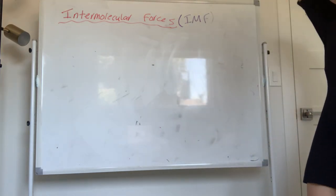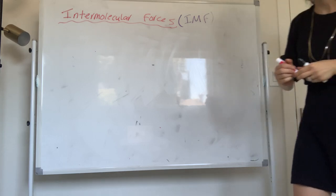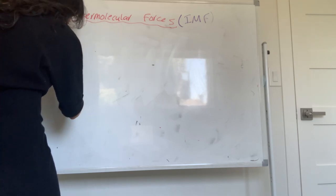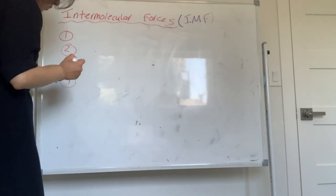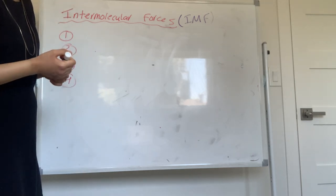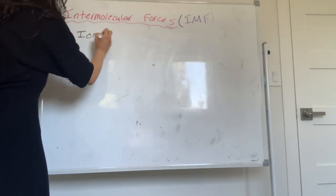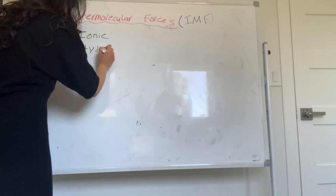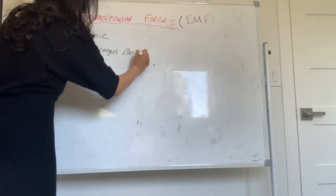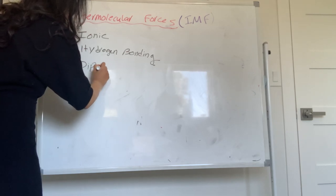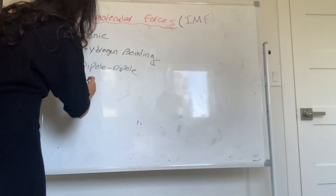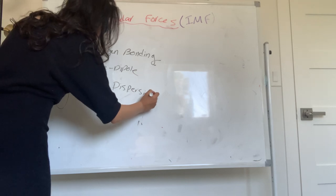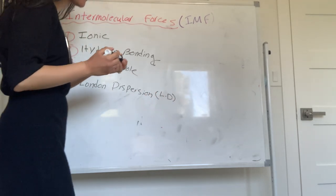We have four main types of IMF, and I'm going to list them from the strongest to the weakest. The first one is ionic. The second one is hydrogen bonding. Then it's dipole-dipole — we also call it dip-dip. And the last one is London dispersion, which we'll call LD.